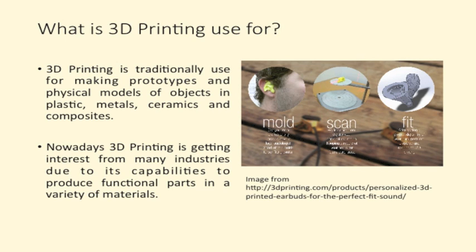So what is 3D printing used for? 3D printing is traditionally used for making prototypes and physical models of objects in a variety of materials such as plastic, metal, ceramic, and composites. Now these days, 3D printing is getting interest from many industries due to its capabilities of producing functional parts in a variety of materials. An example of this is that customized earbuds or earpieces have been produced through 3D printing, as you can see from the image on the right.